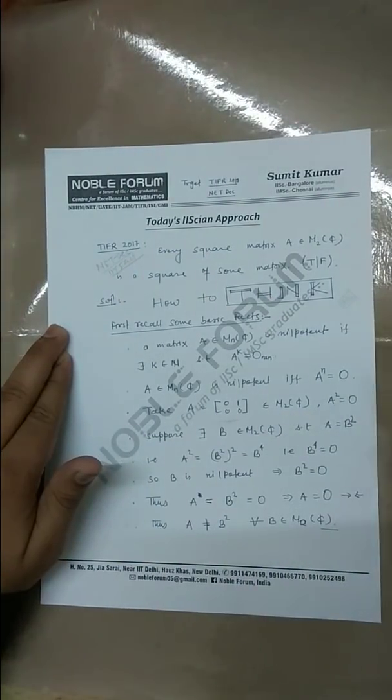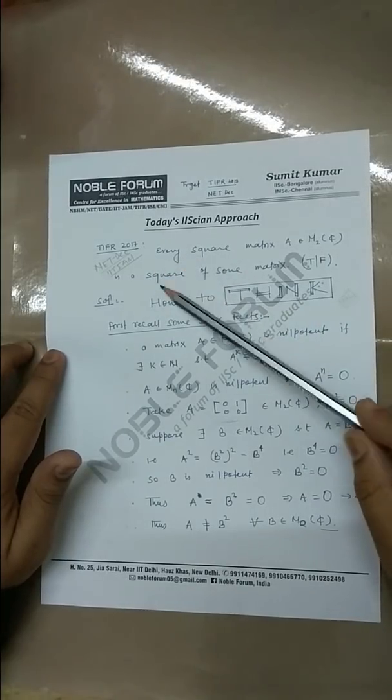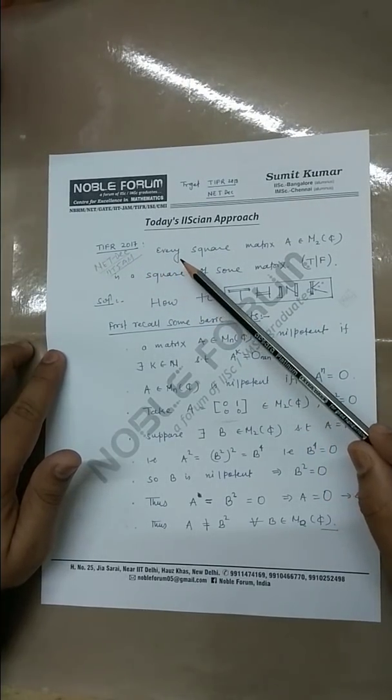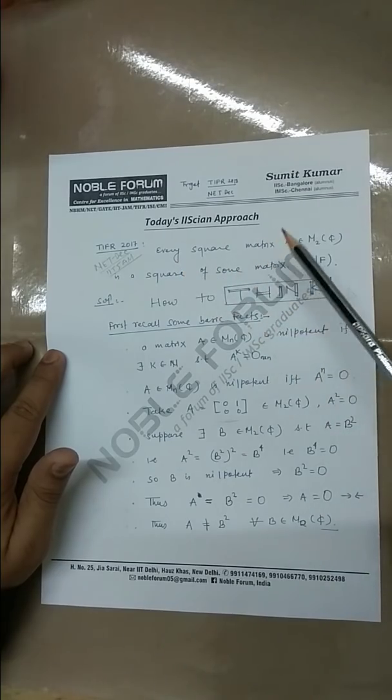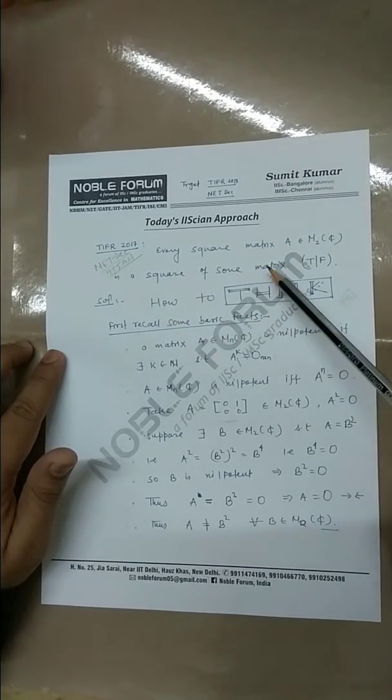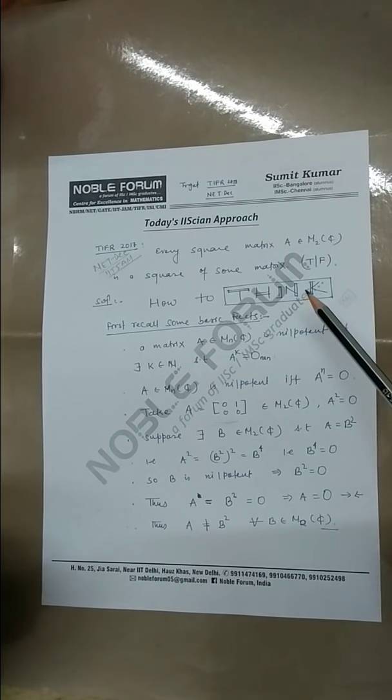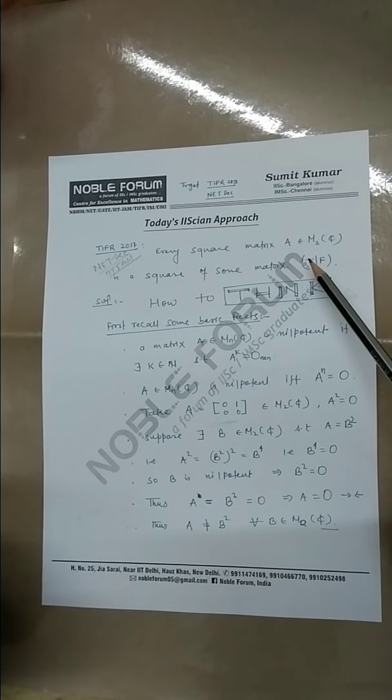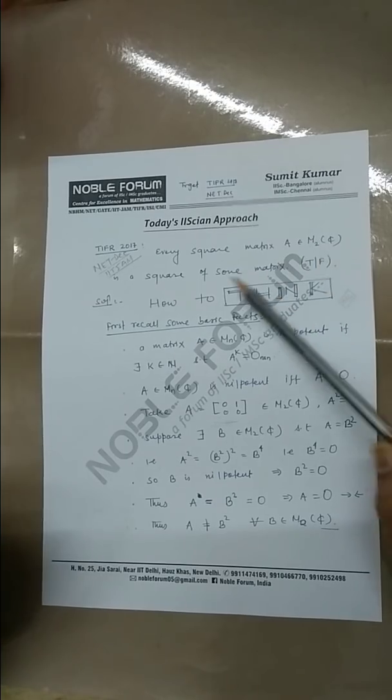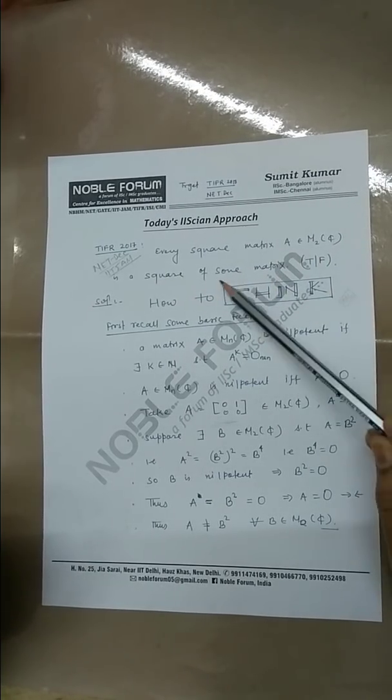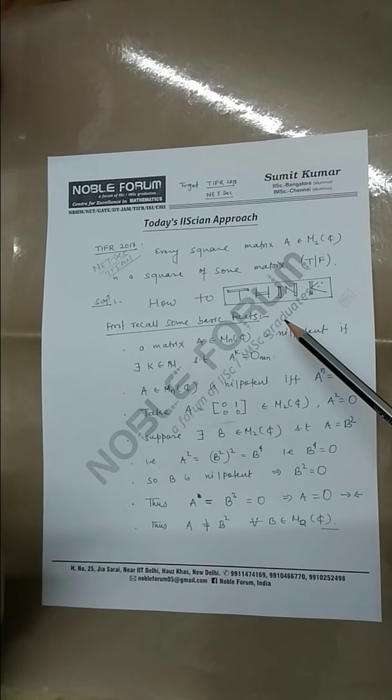The question is very simple: every square matrix A is a square of some matrix. The condition is A belongs to M_2(C), A is a 2×2 complex matrix. Can you write it as a square of some matrix? That means does there exist B belongs to M_2(C) such that A equals B squared?